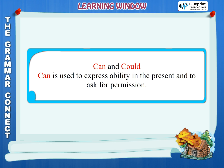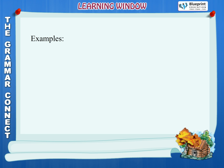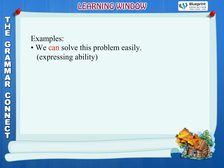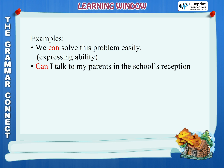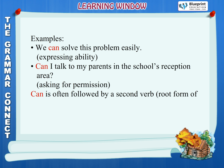Can and could. Can is used to express ability in the present and to ask for permission. Examples: We can solve this problem easily — expressing ability. Can I talk to my parents in the school's reception area — asking for permission? Can is often followed by a second verb in the root form of the verb. Examples: can walk, can sit.